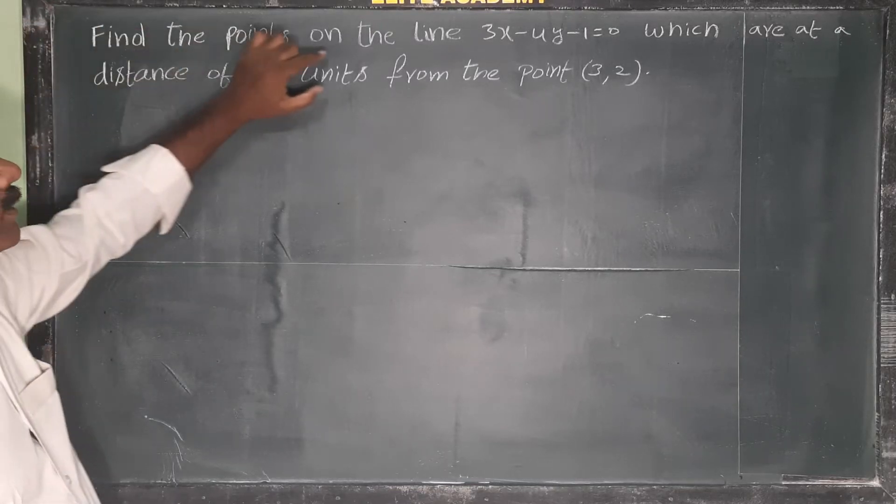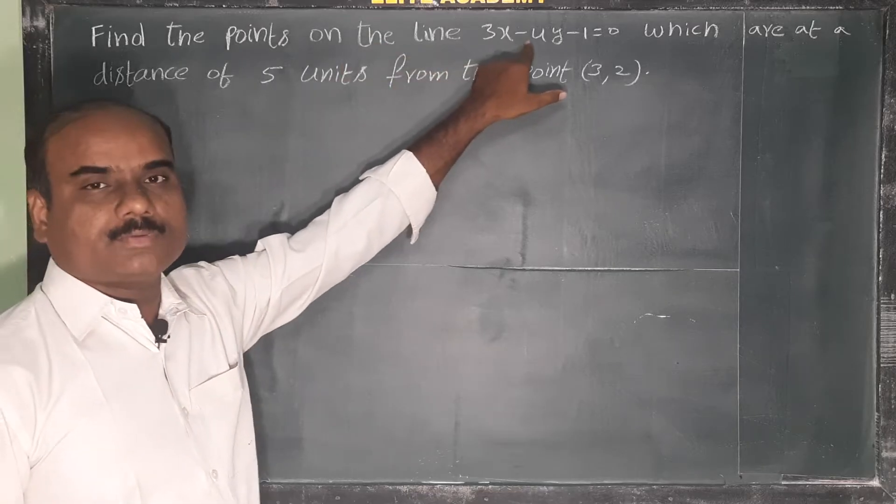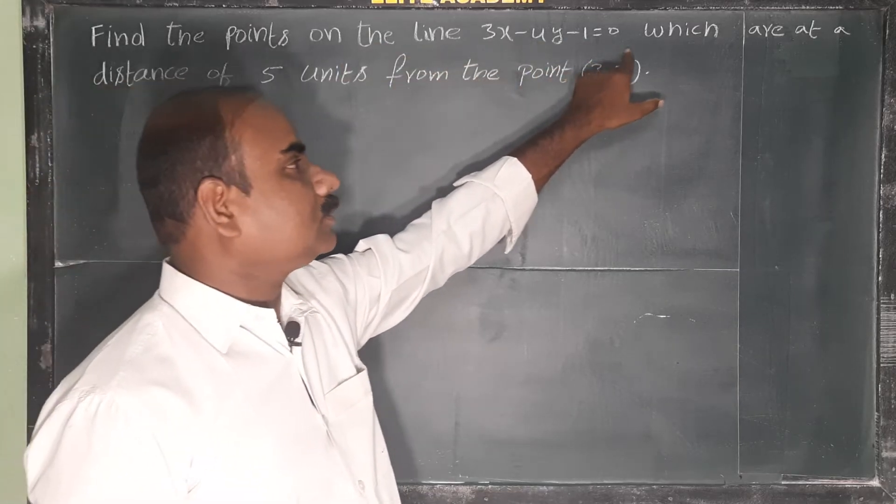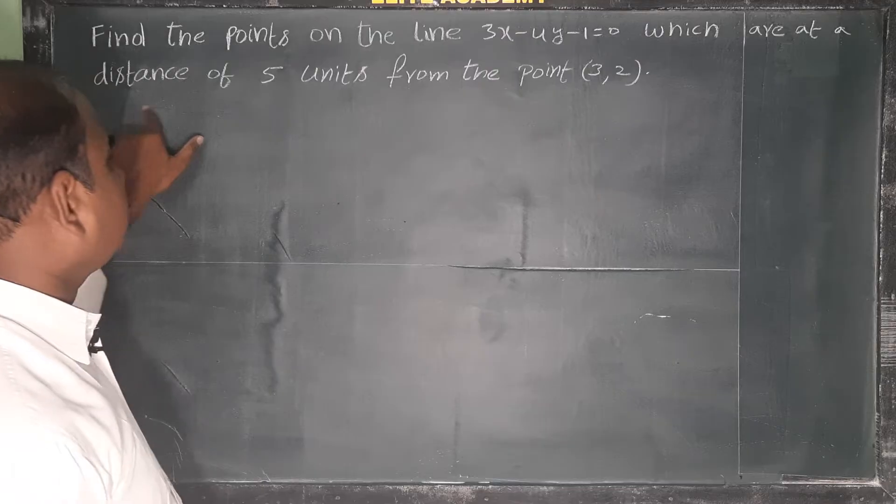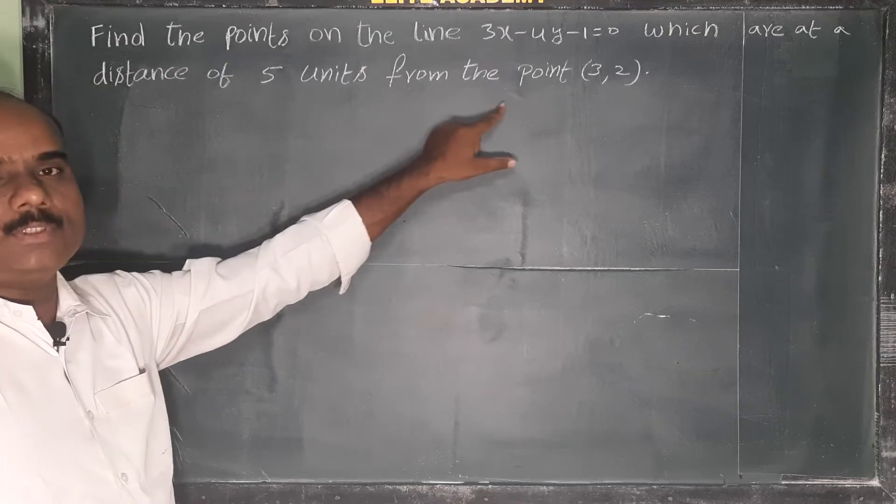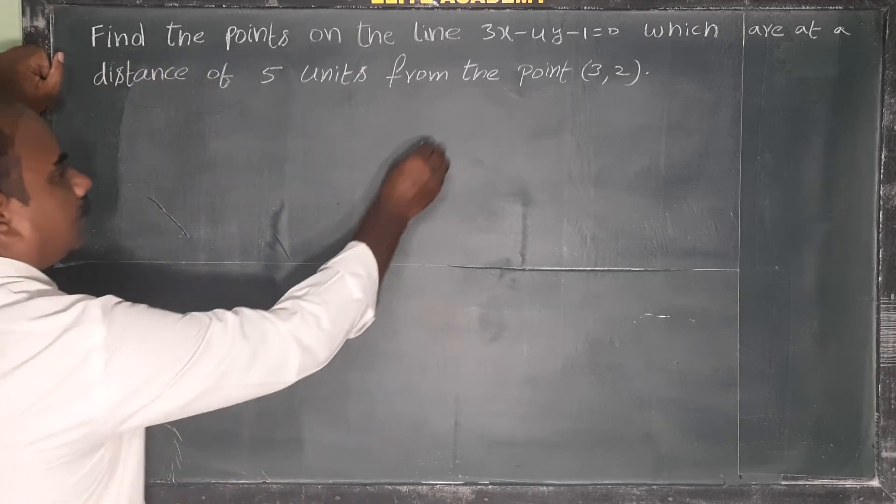Find the points on the line 3x minus 4y minus 1 equals 0 which are at a distance of 5 units from the point (3, 2). So we have a straight line on the coordinate plane.